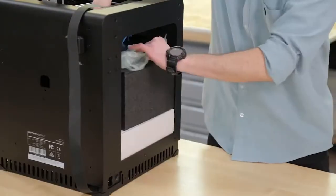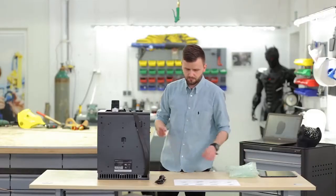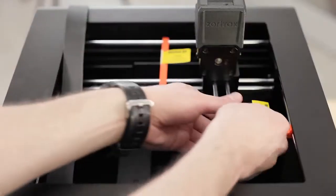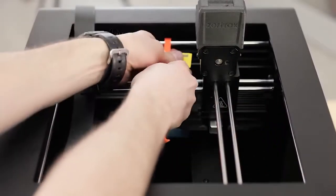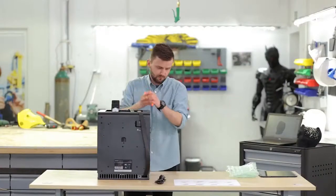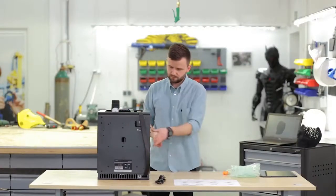Now you can take out the bubble wraps and take off the shipping clips which secure the extruder from moving while the printer is in transport. Take out the protective foam.